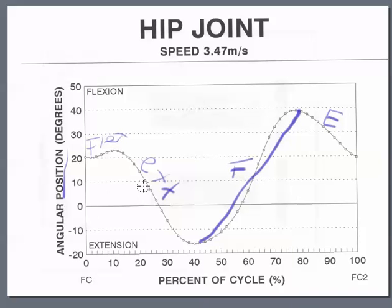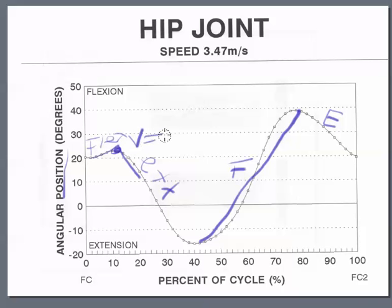Then we think about what's happening during each of these movements. When we change direction from flexion to extension, velocity is equal to zero. You can pick out all the points where velocity equals zero — down here, and up here around 80%.